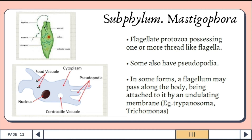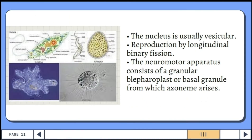Of these two, Phytomastigophora includes photosynthetic or plant-like flagellated organisms, but Zomastigophora includes animal-like single-celled organisms that have whip-like flagella. They do not contain chloroplasts, hence they are not photosynthetic. The nucleus is usually vesicular, and the reproduction is by longitudinal binary fission.